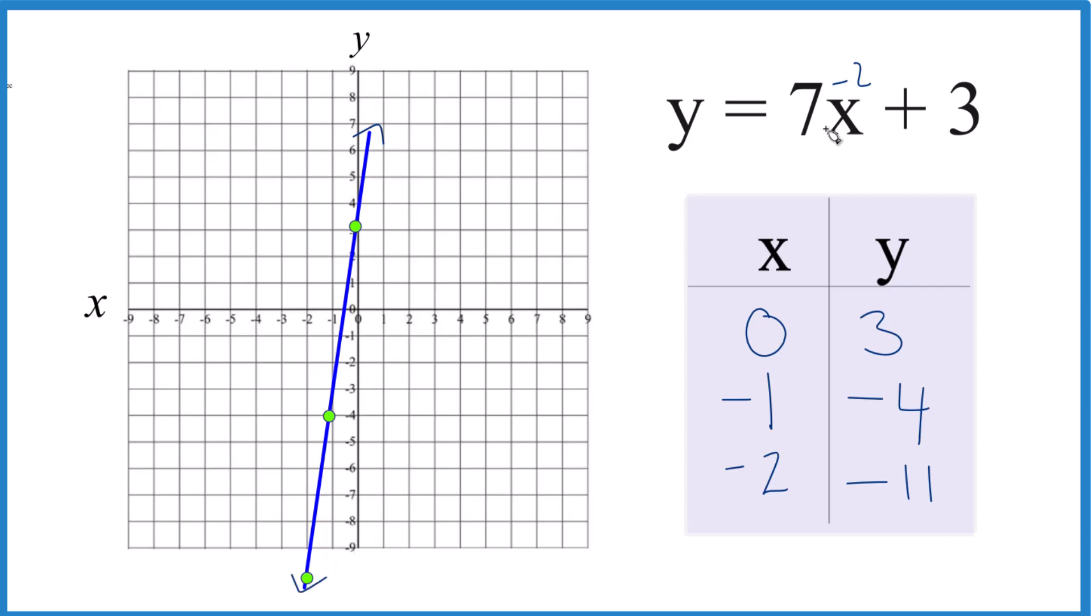That is the graph for y equals 7x plus 3. You could extend your graph paper here, that might work, but either way, this is the line, and if we put any value in for x here, calculate it, and get y, it's going to be on this line. That's it. This is Dr. B graphing y equals 7x plus 3. Thanks for watching.